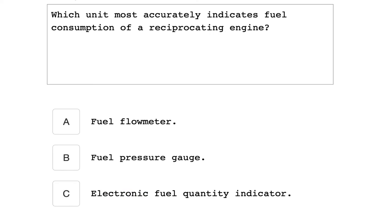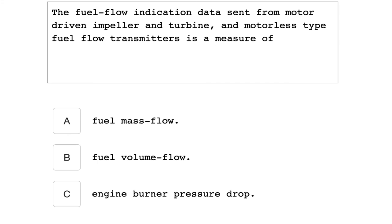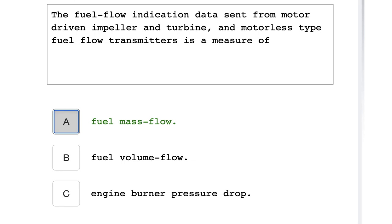Which unit most accurately indicates fuel consumption of a reciprocating engine? Fuel flow meter. The fuel flow indication data sent from the motor driven impeller and turbine and motorless type fuel flow transmitters is a measure of fuel mass flow.